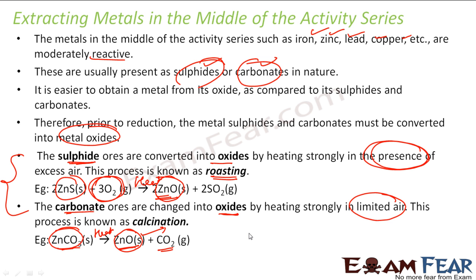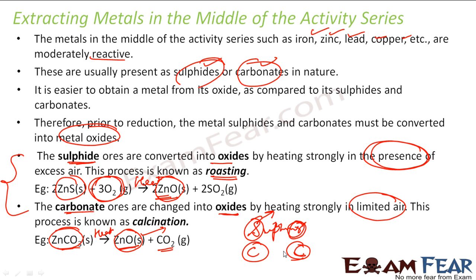One way to remember this is: sulfide contains sulfur — S-U-L-P-H-U-R — so S and R are matching, meaning when you have sulfur you use roasting. And carbonate and calcination both start with C, so if it is carbonate, we use calcination. So sulfur ends with R, therefore sulfide is roasting, and carbonate is calcination because both are C.